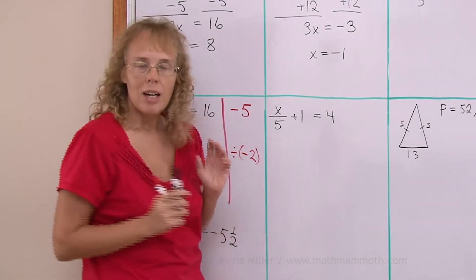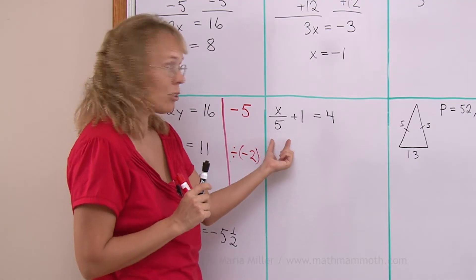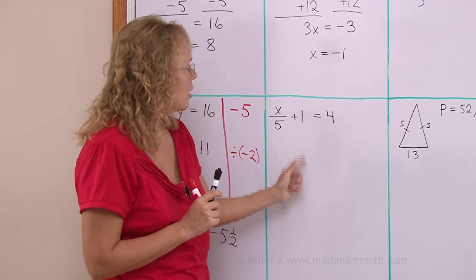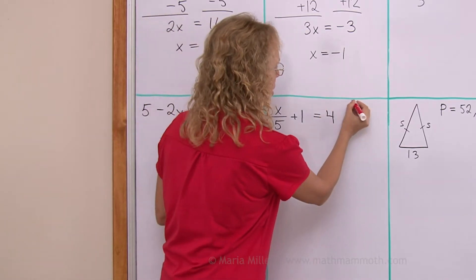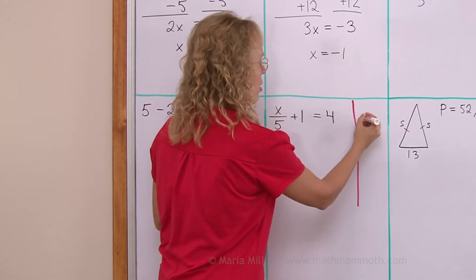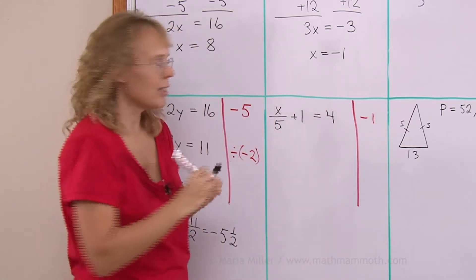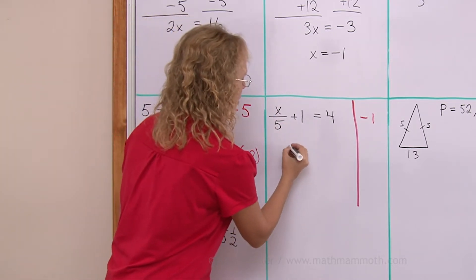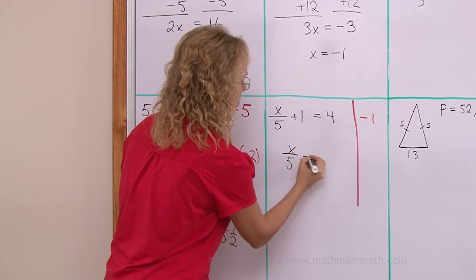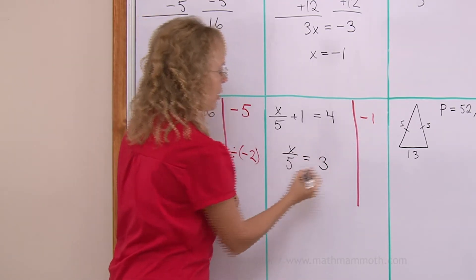Here. Again, I will want to have the x or the term with x here alone. So I'll first get rid of this plus 1. Let me make my margin here. I will first subtract 1 from both sides and that will get rid of this plus 1. So I'm left with x over 5 on this side. Over here I do 4 minus 1. So that's 3.